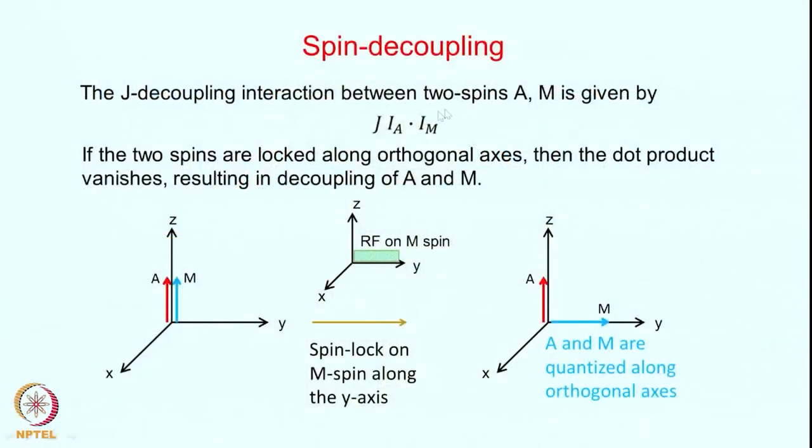How to do spin decoupling? This is an important topic and we will look at the basic concepts and how it can be applied to different kinds of situations. You may recall the coupling between two nuclei — let us say A and M — two spins A and M is written as J·IA·IM. This is the coupling interaction between the two spins A and M, and J is the coupling constant.